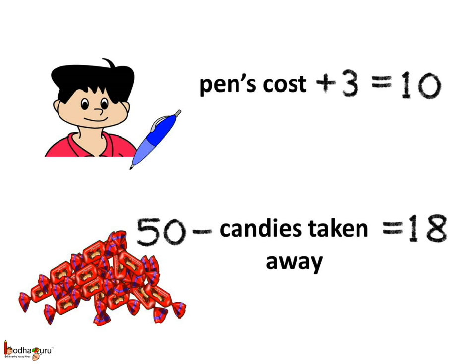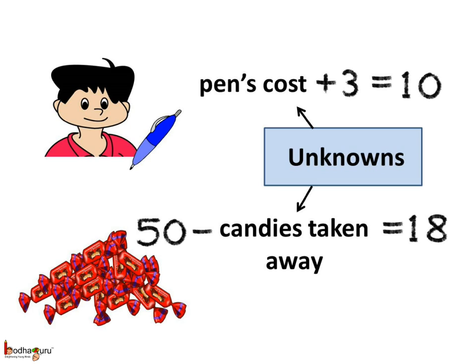Same way, there were 50 candies in a bowl. Few children took some candies and only 18 candies were left. So 50 minus candies taken away is equal to 18.